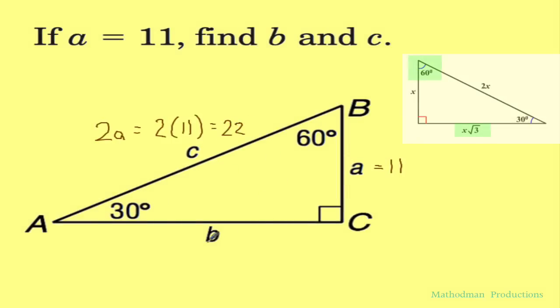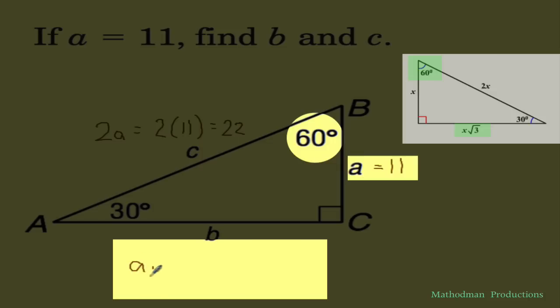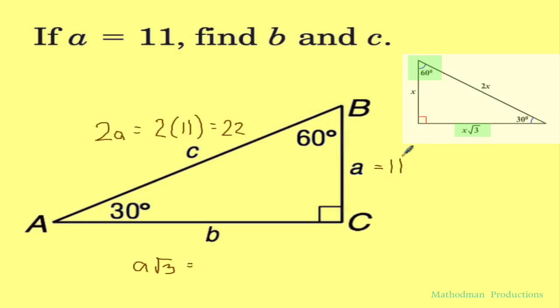The one across 60 is whatever a is times the square root of 3. Well I know what a is, it's 11, so that's pretty easy. I just have to do 11 times the square root of 3 which is 19.05.